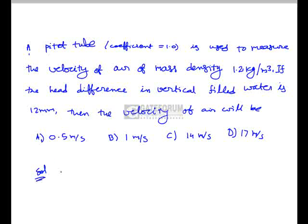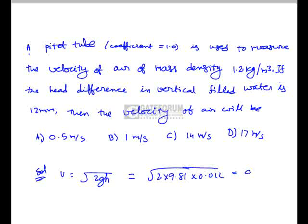Here the velocity of air is equal to the square root of 2gh, which equals the square root of 2 × 9.81 × 0.012 m, giving a value of nearly 0.5 m per second. So the right option is A.